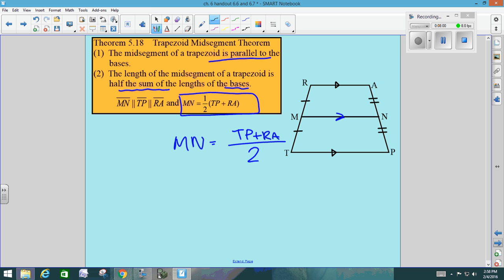In an example, if ra was a length of 12 and tp was, I don't know, 47, and I wanted to find the length of mn, you add the two bases and divide by 2. 29.5. That would be the length of our mid-segment then. It's the average of the two bases. Mid-segment, middle. It's got to be in the middle, so it's the average.